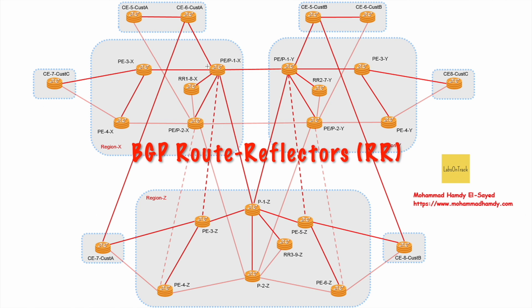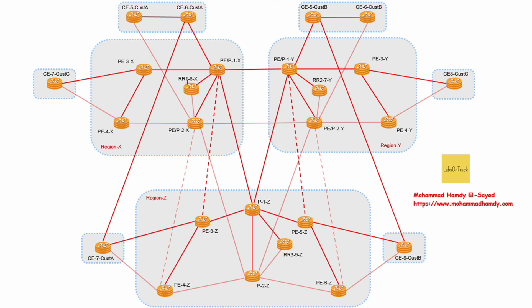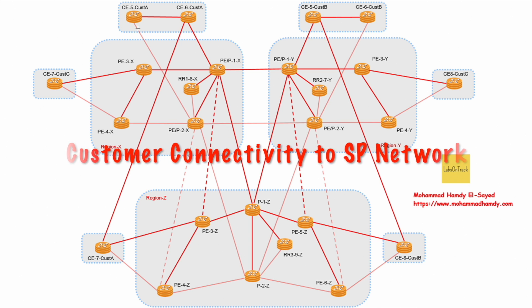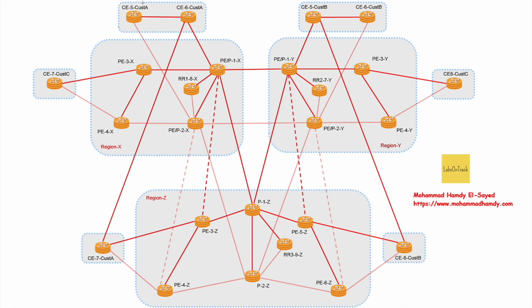There are three route reflectors: Route Reflector 1 resides in Region X, Route Reflector 2 resides in Region Y, and Route Reflector 3 resides in Region Z. There are also three customer branches: Customer A, Customer B, and Customer C.